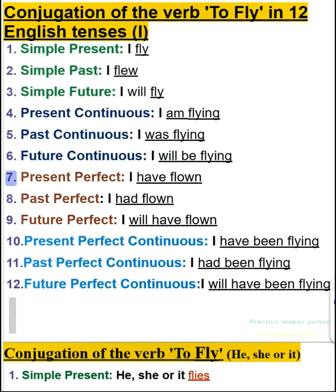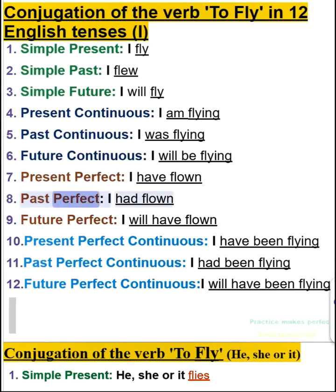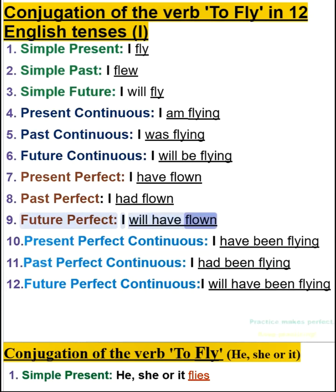7. Present perfect — I have flown. 8. Past perfect — I had flown. 9. Future perfect — I will have flown.